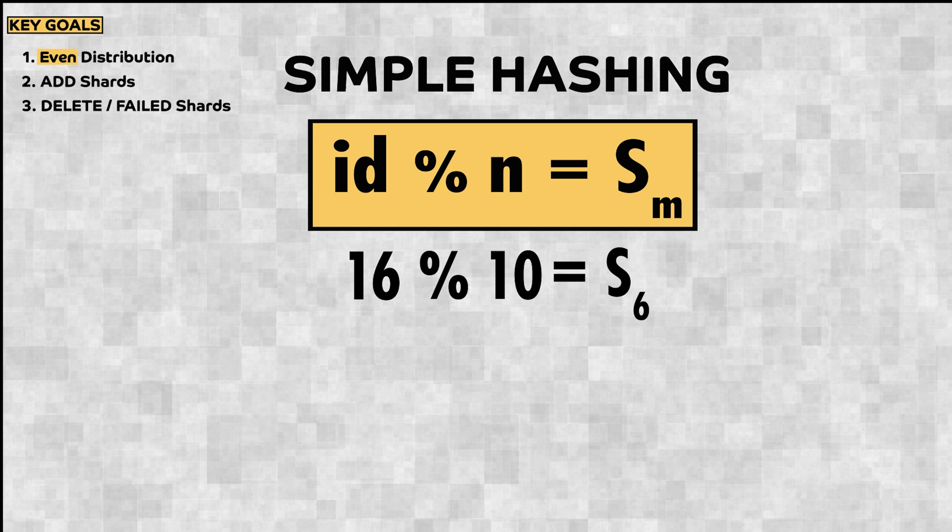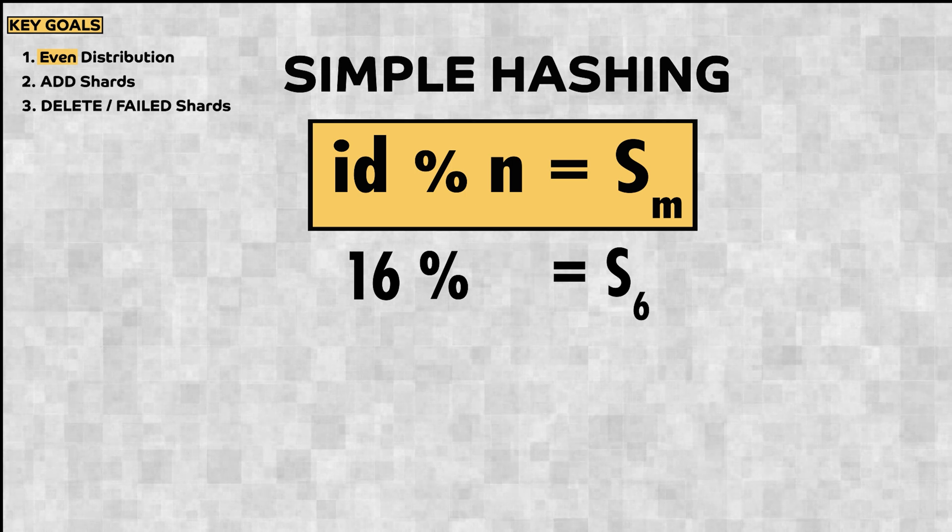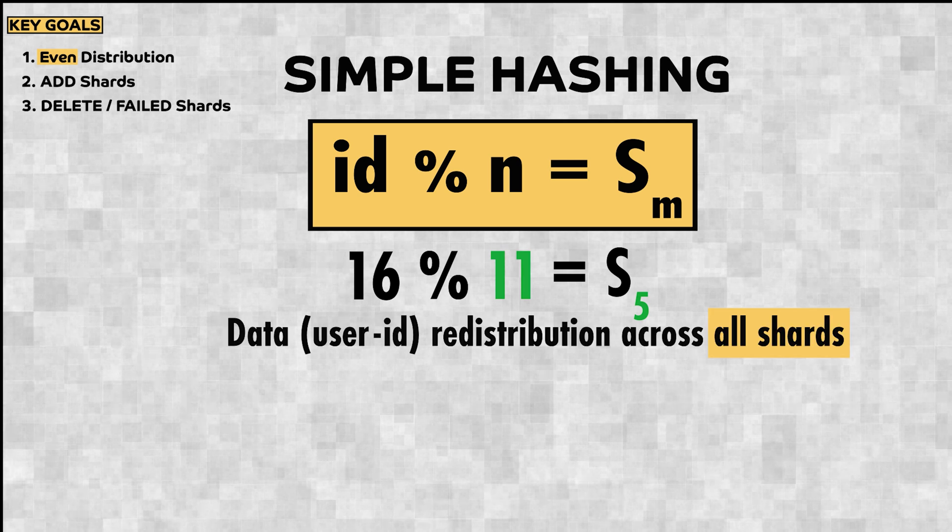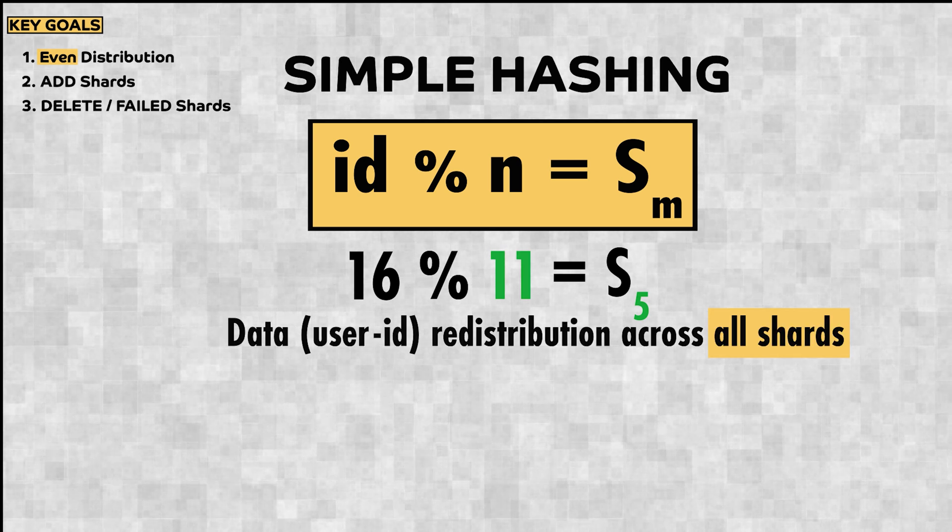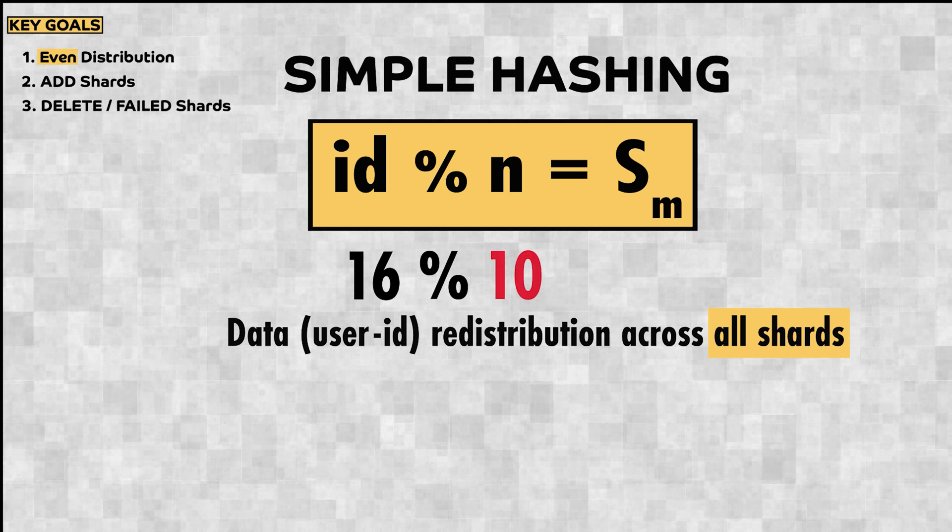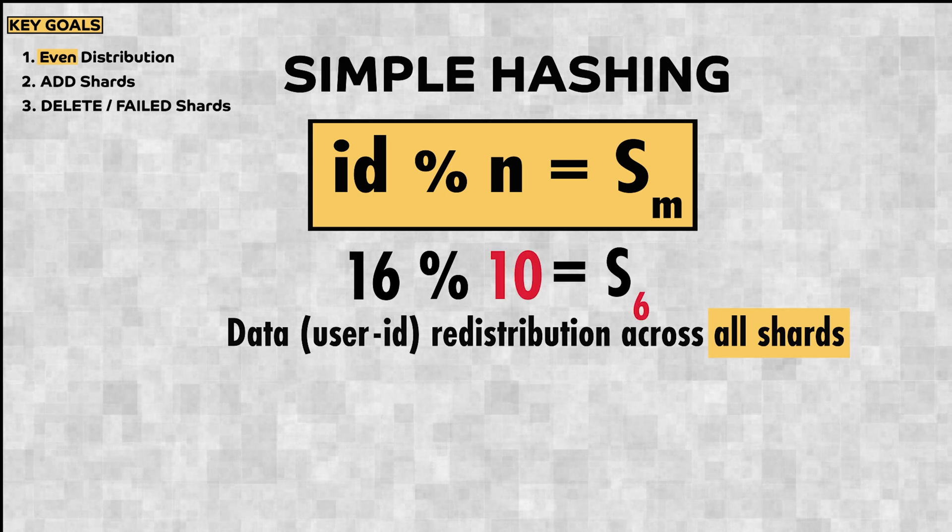With this approach, everything will be fine as long as things are static. But if you have to add a new shard, you have to redistribute the data to the entire dataset, an extremely expensive operation. And it's the same problem when the shard goes down because you'll be forced to recompute your hashing and redistribute the data across shards.